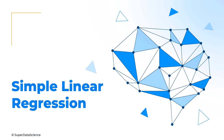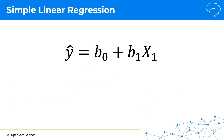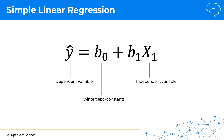Hello and welcome back. Let's have a look at simple linear regression. Here's the equation, and we will look at the parts one by one. On the left we have our dependent variable, which we're trying to predict. On the right we have our independent variable, which is the predictor. Here we have b0, which is the y-intercept, also known as the constant, and b1 is the slope coefficient.